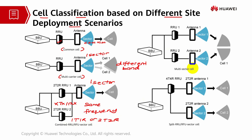The fourth example is the multi-sector cell. A multi-sector cell is combined by multiple sectors — for example, sector 1 and sector 2 — each with separate RF channels, different RRUs, their own antenna and transmit power. This multi-sector cell requires a single frequency network, known as SFN, and also uses PRRU (PICO remote radio) for aggregation cells, such as a lamp site solution.